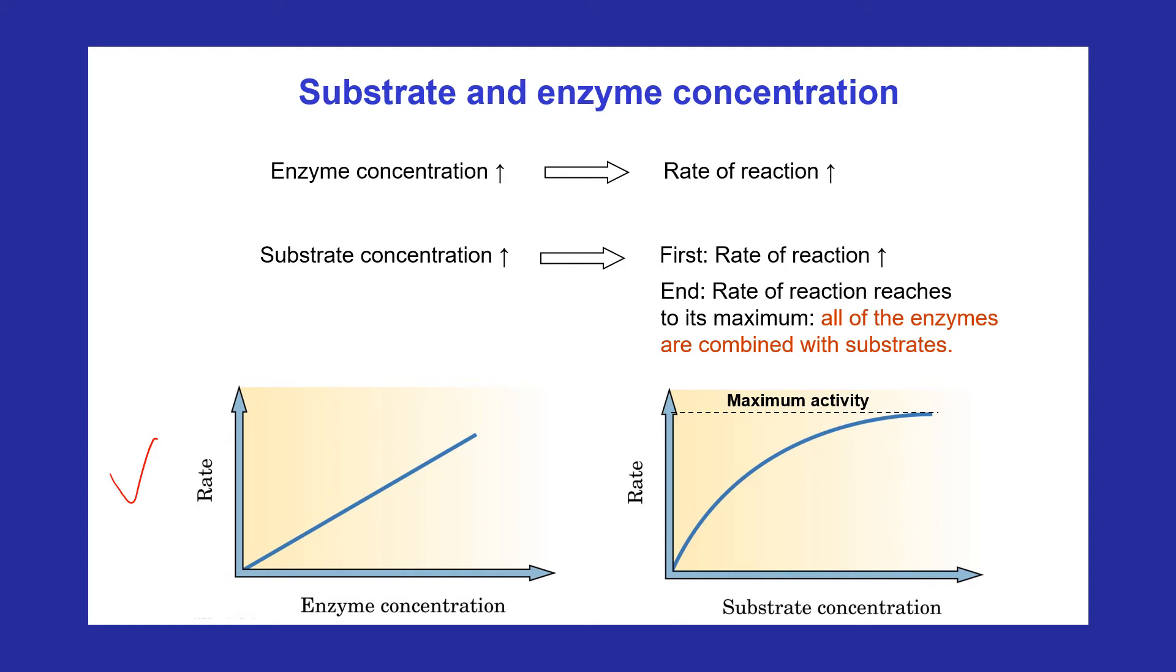When the enzyme concentration is kept constant, increasing the substrate concentration increases the rate of the catalyzed reaction as long as there are more enzyme molecules present than substrate molecules. At some point, an increase in substrate concentration saturates the enzyme. With all the available enzyme molecules bonded to substrate, the rate of the catalyzed reaction reaches its maximum. Adding more substrate molecules cannot increase the rate of the catalyzed reaction. We can see the relationship between the rate of reaction and both substrate and enzyme concentration in the figure.